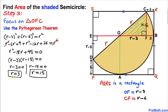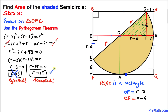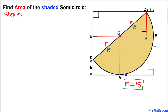Now we can see that r equals 3 is not going to work, because if we plug it in, r minus 6 gives us negative 3 for the length, but a length cannot be negative. So we are going to reject r equals 3 and accept r equals 15.